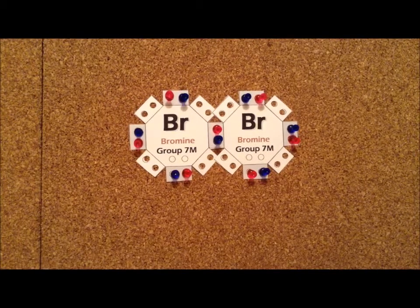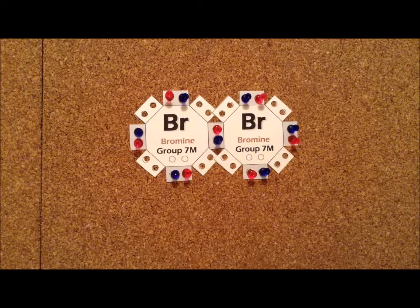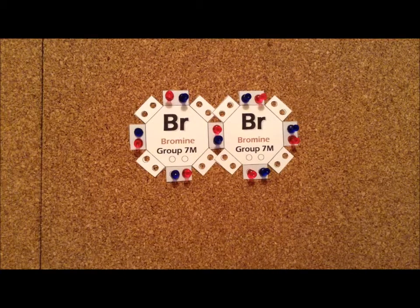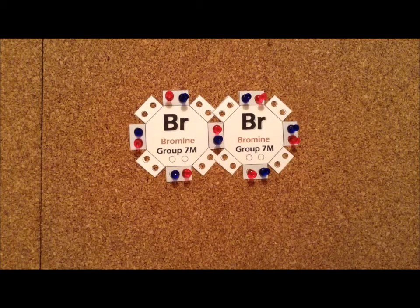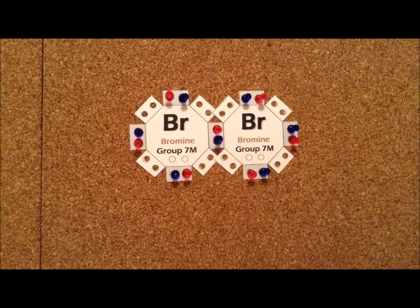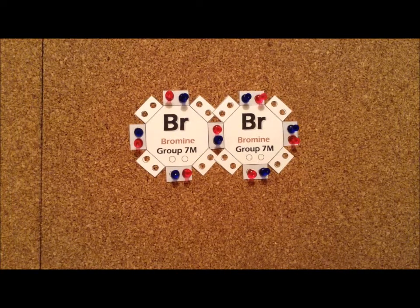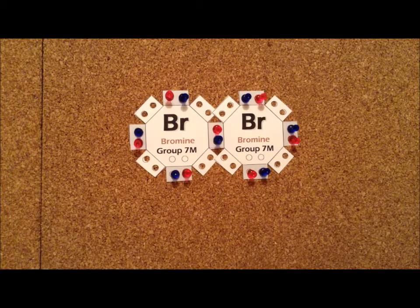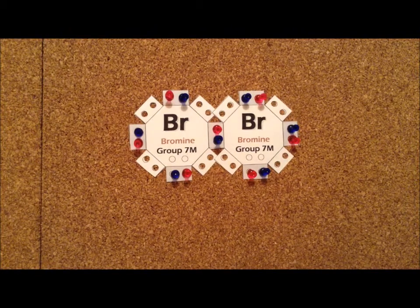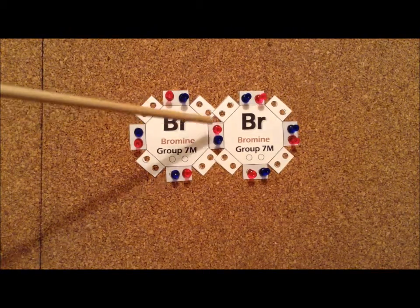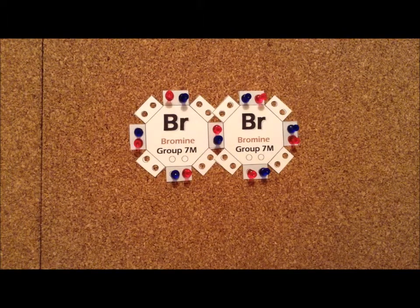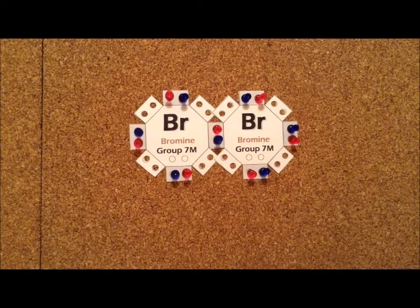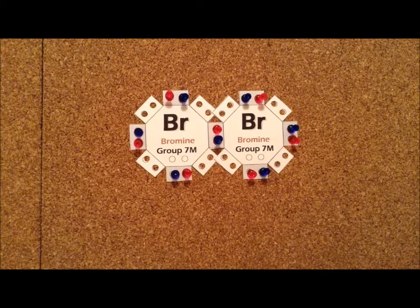The next element in the series of the halogens is bromine. Bromine exists as a diatomic liquid. It is one of the very few elements that exist as a liquid at room temperature. Again, since each bromine contributes seven valence electrons, Br2 is a 14-electron system. We can satisfy the octet rule for each of the atoms by having a single bond between the two bromine atoms, and then we can allocate the electrons at all the required positions. We do not need to expand the octet for this particular compound.